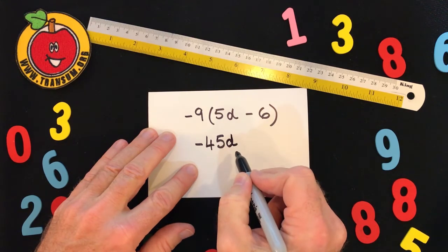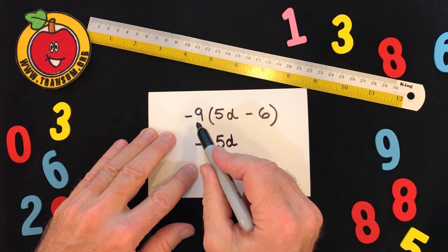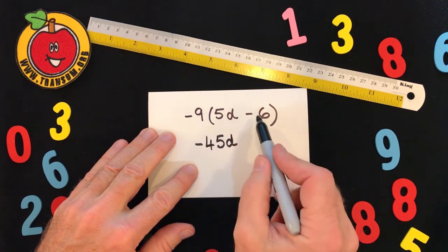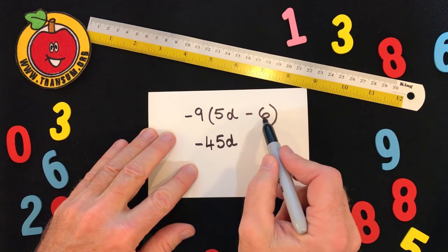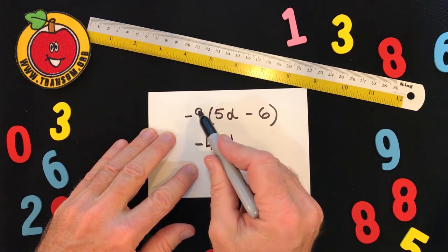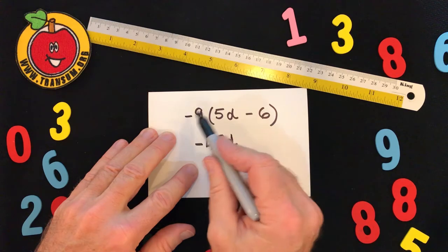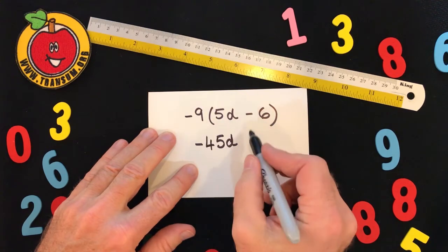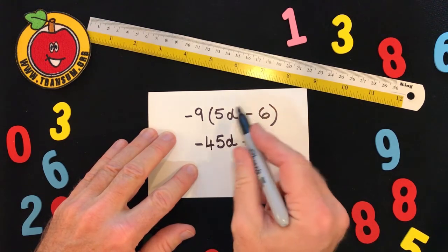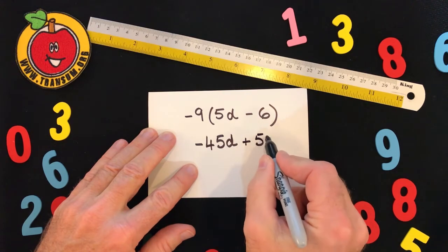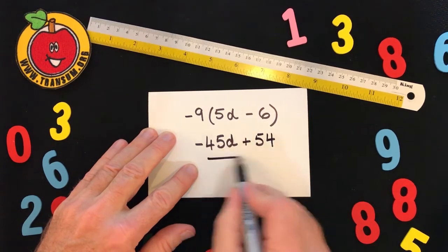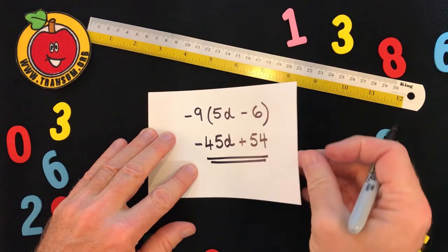And then we do negative nine multiplied by negative six. So a negative multiplied by a negative will give a positive answer, so it's plus, and six nines are 54. So the whole answer is minus 45d plus 54.